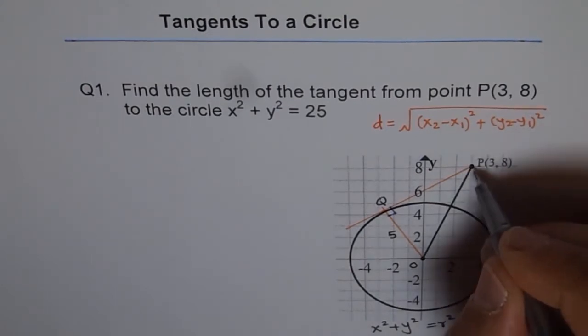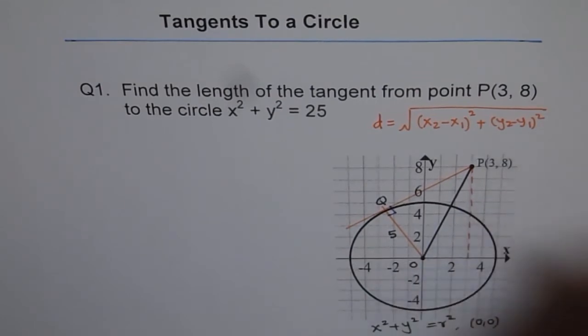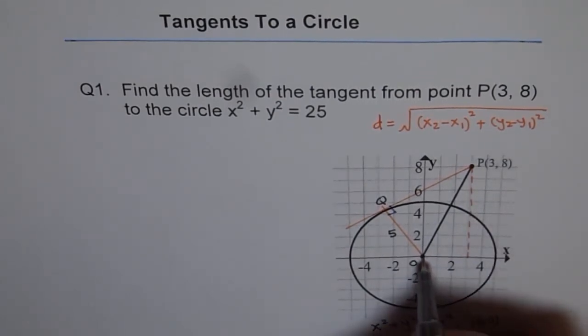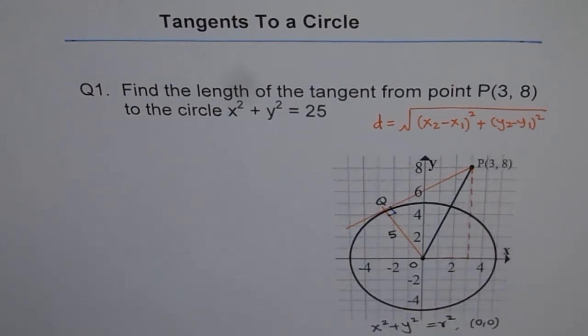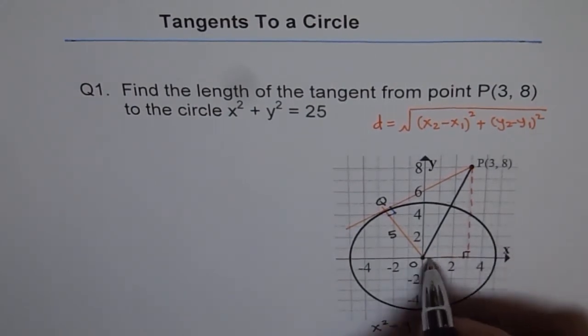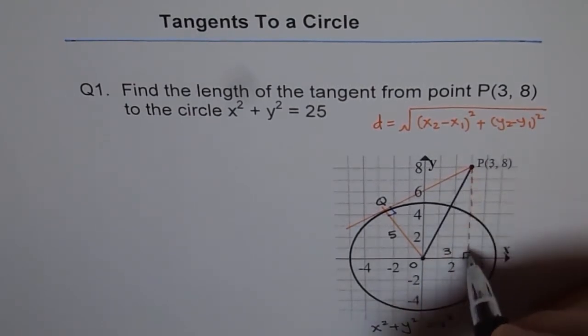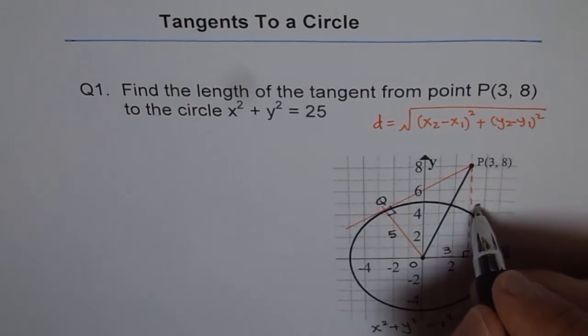So if I drop a perpendicular from P to the horizontal x-axis, then what happens? We have this right angle triangle here. We have this triangle here, and we know this side is 3 units, and our height of this is 8, the y value.